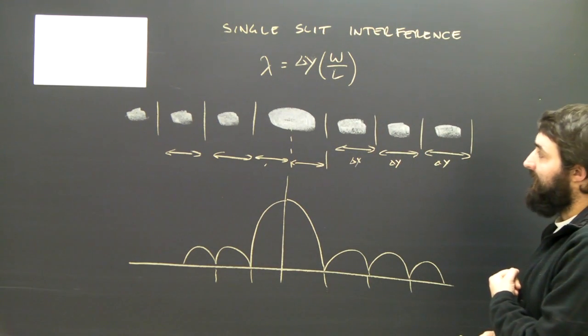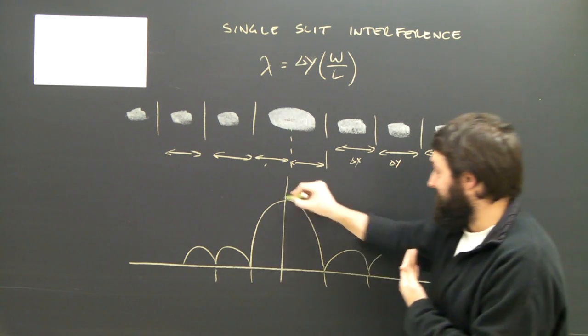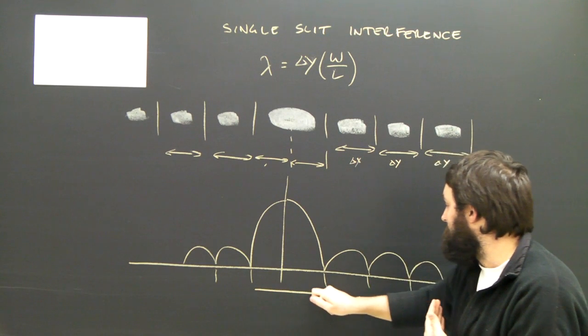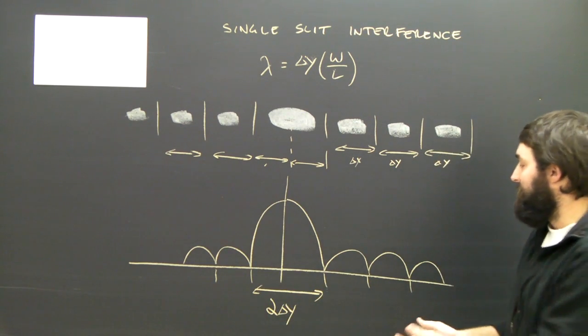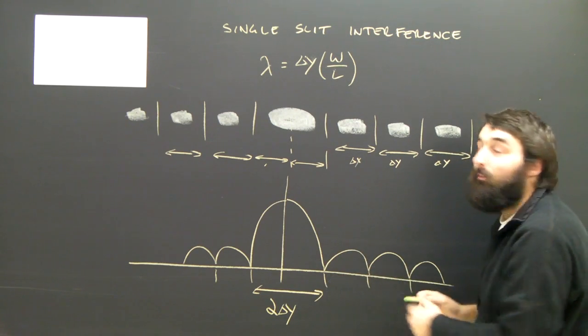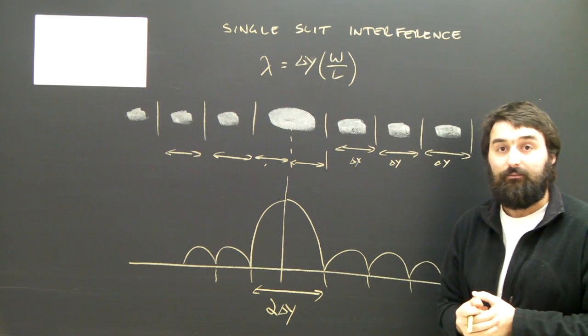But what you've got to make sure you understand here is that the central maximum is a distance of two delta y's. All the other ones are just delta y, just like the two slits.